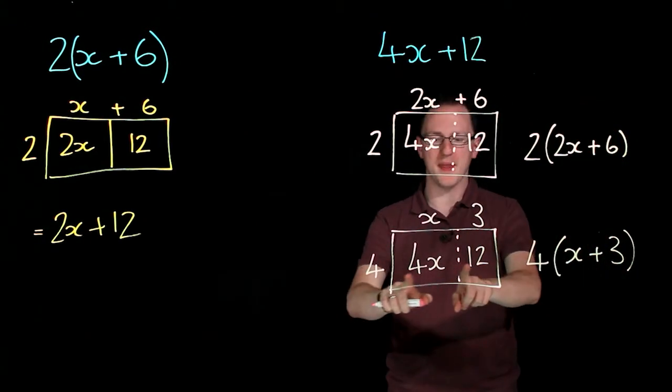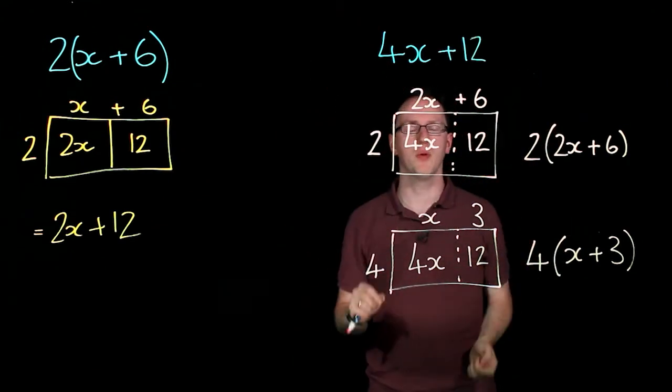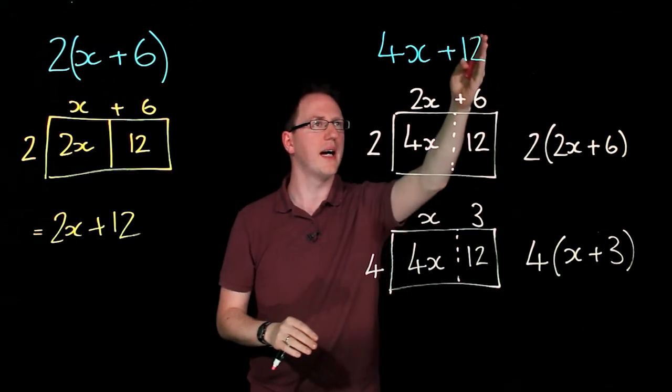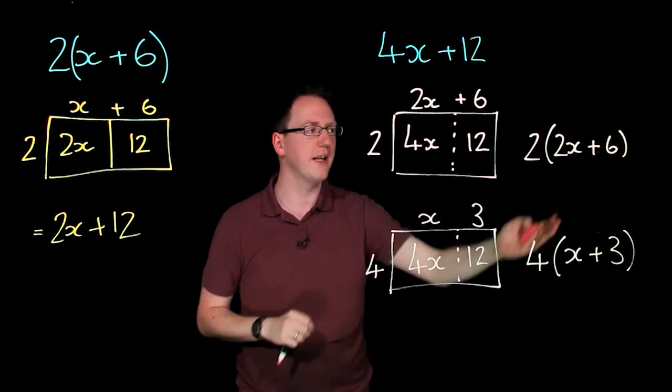Now if we were to expand that we can see we'd get exactly the same as what we started with. So both of these are valid factorising. We factorise 4x plus 12 in two valid ways.